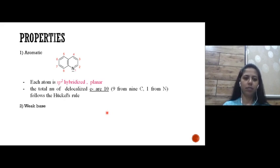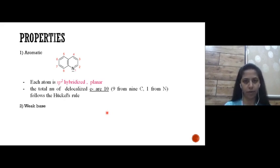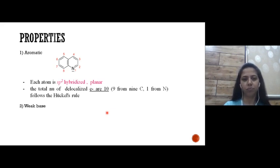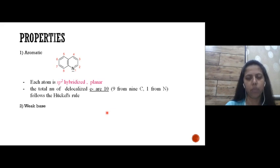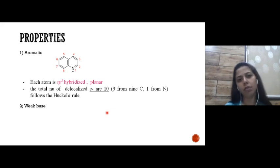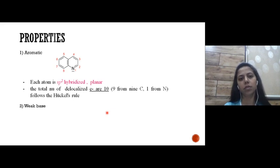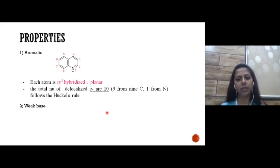The first question is whether quinoline is aromatic or not. It is a heterocyclic ring, so we must check. For any compound to be aromatic, it has to follow Hückel's rules — three basic conditions: first, cyclic; second, planarity; and third, the 4n+2 pi electron rule.